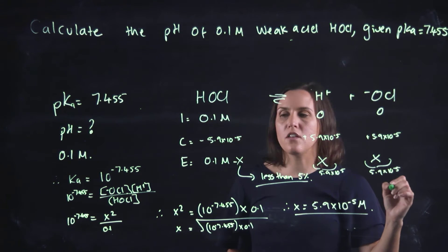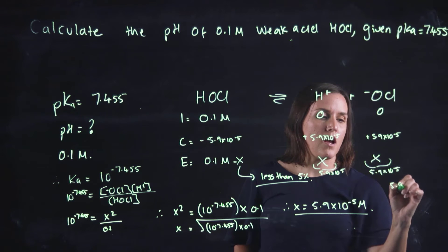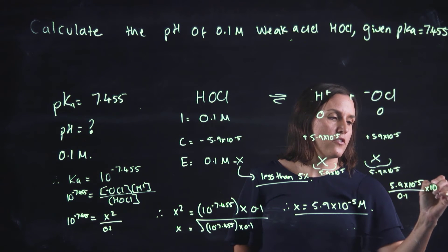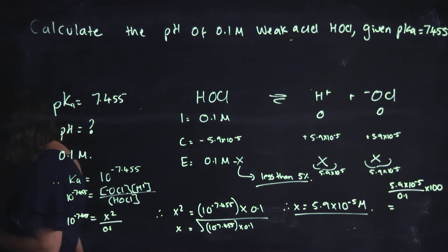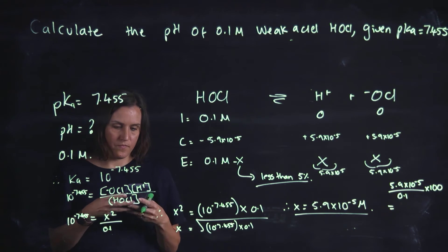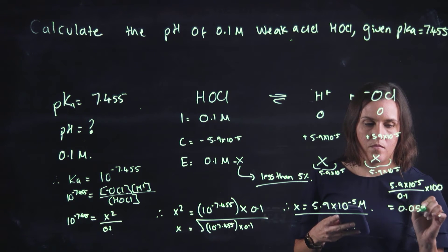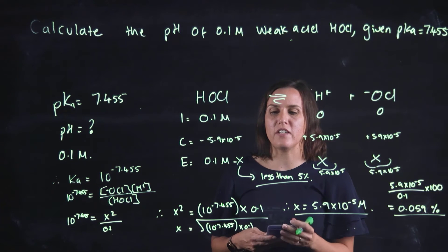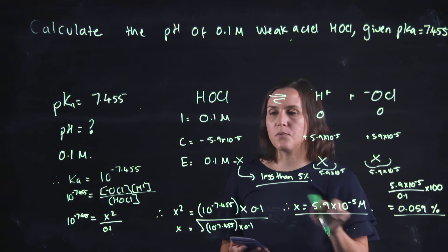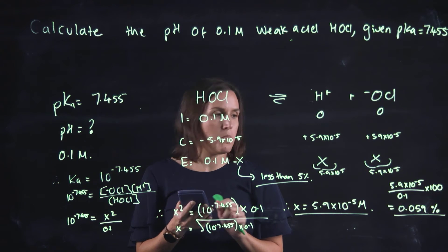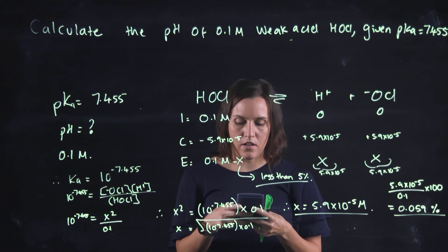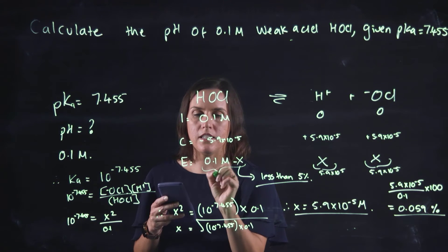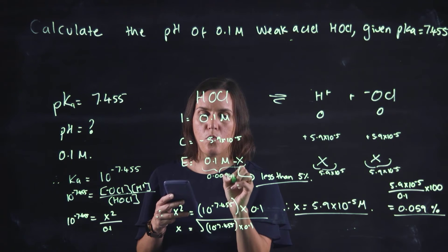Showing that this is less than 5% now, so therefore we would go 5.9 by 10 to the minus 5 over 0.1 times 100 would give us a value of 0.059%. So this one here would be 0.1 minus 5.9 by 10 to the minus 5, so it's basically 0.1 still but it is 0.0999941 molar.